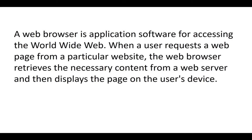What is a web browser? A web browser is an application software for accessing the worldwide web. When a user requests a web page from a particular website, the web browser retrieves the necessary content from a web server and then displays the page on the user's device. The web browser — like Chrome or Firefox — allows you to access information on the internet. Without a web browser, you wouldn't be able to access information on it.